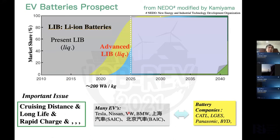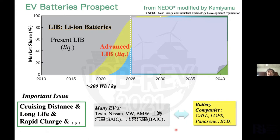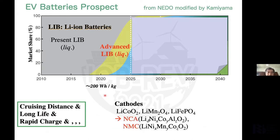This is the EV battery prospect from NEDO. Present lithium-ion batteries are now going to change to much more advanced types. An important issue is cruising distance for EVs, long battery life, and rapid charging — and of course safety is very important. Many EV companies are now developing batteries themselves, collaborating with various battery companies like CATL, LGES, Panasonic, et cetera. For cathode materials, there has been a shift from lithium cobalt oxide to NCA or NMC — that is advanced LIB.